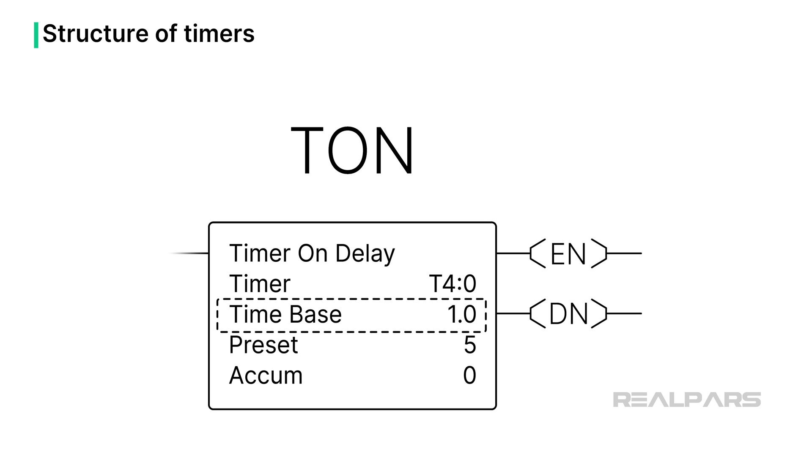The time base is the smallest unit of time tracked by the timer, such as 1.0 seconds, 0.1 seconds, or 0.01 seconds. The preset is the timer setpoint. The accumulated value is the elapsed time. All of these parameters are built into the timer function.